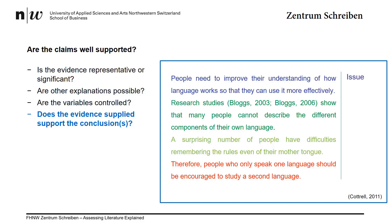The fourth aspect is whether the evidence supports the conclusion. Here, the issue is that the author asserts that people need to better understand how language works. The author provides two pieces of evidence: people cannot describe their own language, and people cannot remember the rules of their own language. The author then concludes that people should learn a second language. This conclusion is problematic because the author fails to establish how learning a second language will help people remember the rules of their first language, or improve one's understanding of how language works. While all the points may be true individually, no evidence is provided for why one should learn a second language, or how that will improve one's understanding of language. The research may be great, but is not directly valid in this case.